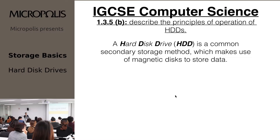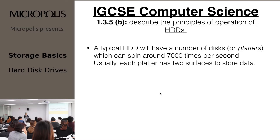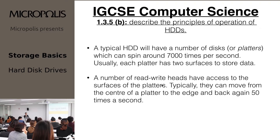Platters kind of look like this on screen. You can see read/write heads, and there are a number of them, which means there are a number of platters. A typical hard disk drive has multiple platters that can spin around 7,000 times per second. Usually each platter has two surfaces to store data. The read/write heads have access to those surfaces and can typically move from the center to the edge and back 50 times a second.